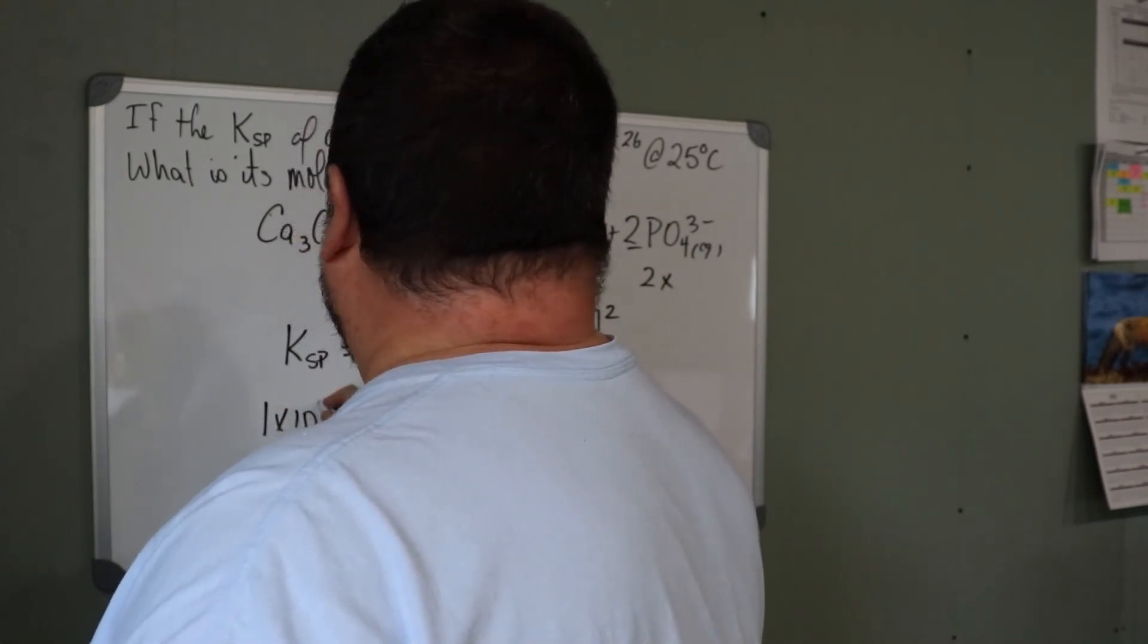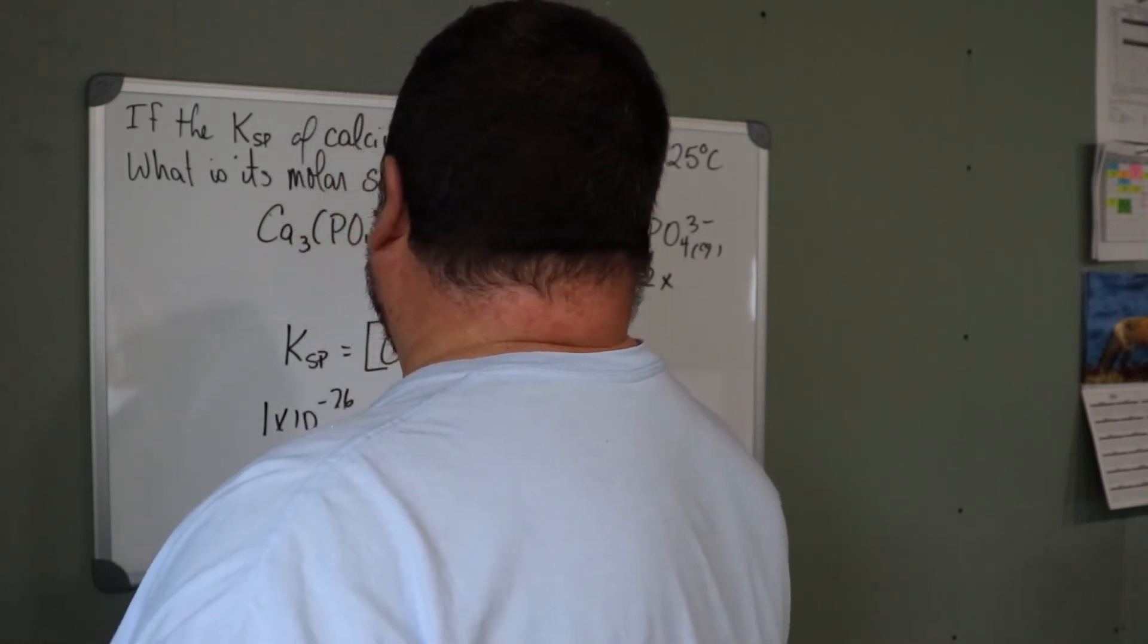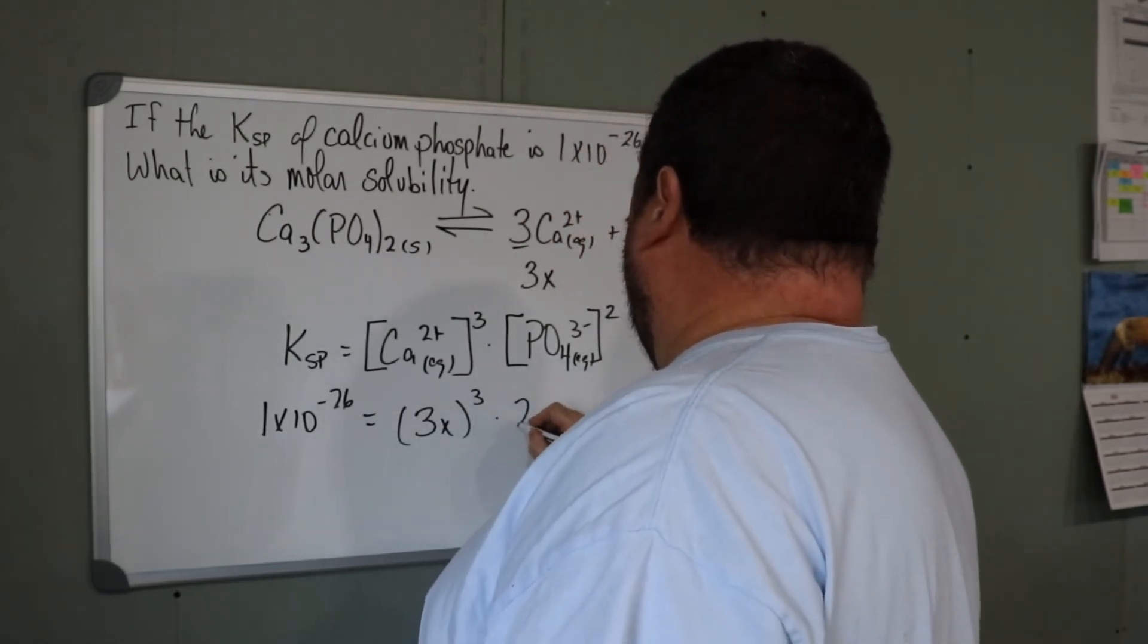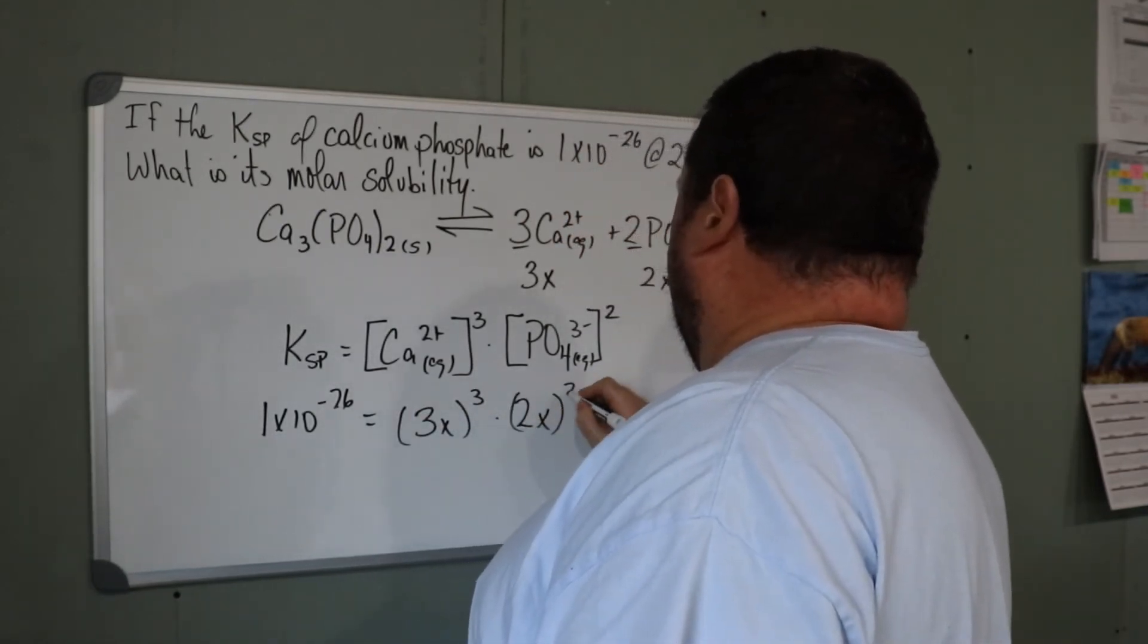And then substituting our values, 1 times 10 to the -26 is equal to 3X cubed times 2X squared.